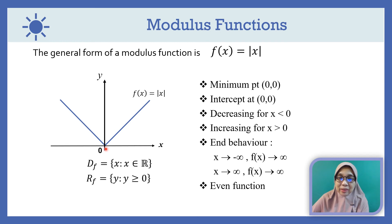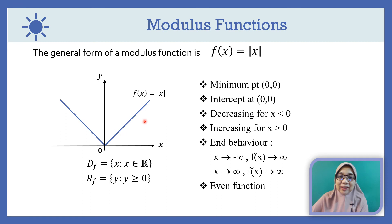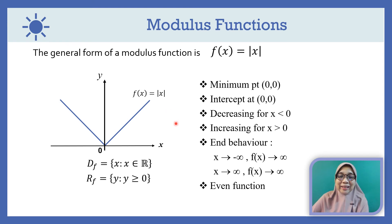Our last function type is the modulus function. The graph intercepts at (0, 0), decreasing for all x less than 0, and increasing for all x greater than 0. The end behavior: as x tends to negative infinity or positive infinity, f(x) tends to infinity. It is an even function — meaning when you reflect the graph horizontally, the shape remains the same.